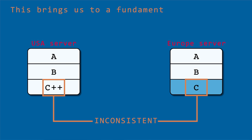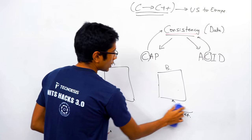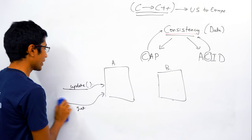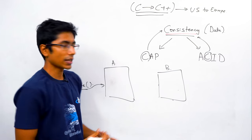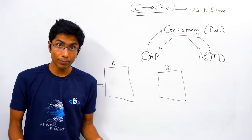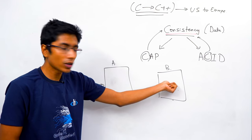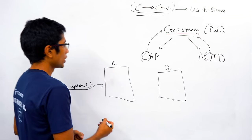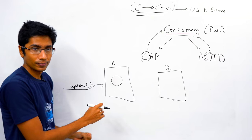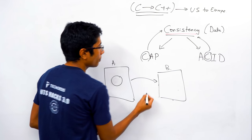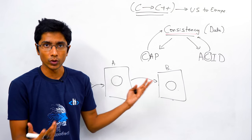This brings us to a fundamental problem with distributed systems that depend on acknowledgements for consistency. If you send an update to a server, it has two options: either it locally commits the update, or it waits for its peer to give acknowledgement back. If it commits locally, it can't depend on the peer to also commit, because the message might fail — it's an unreliable network.